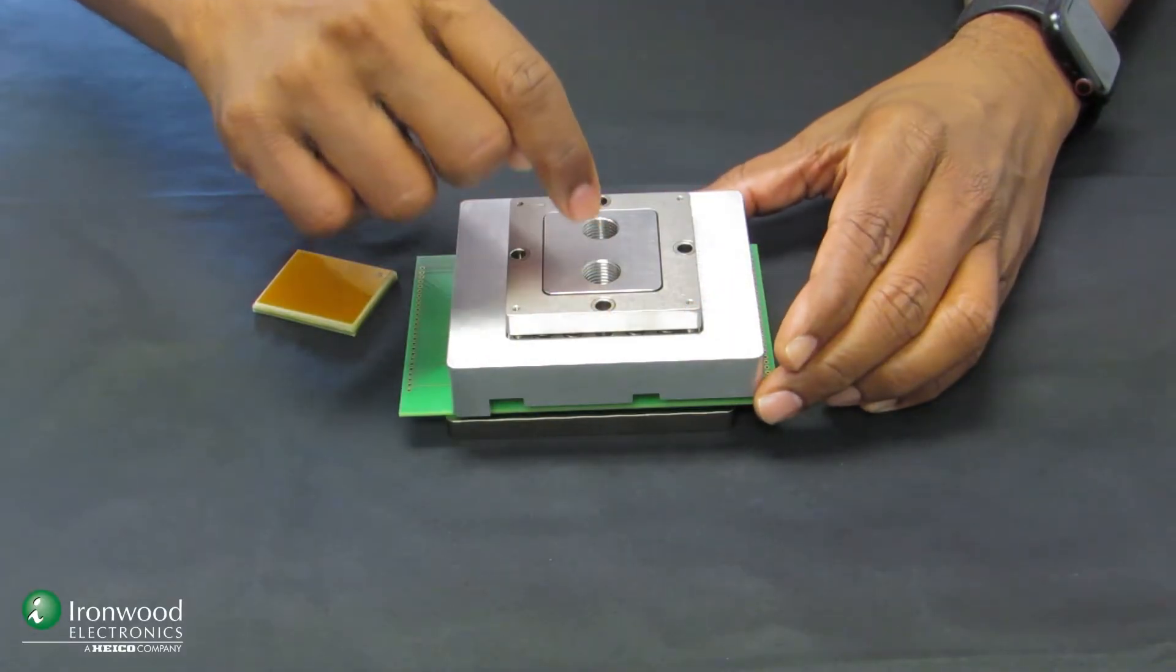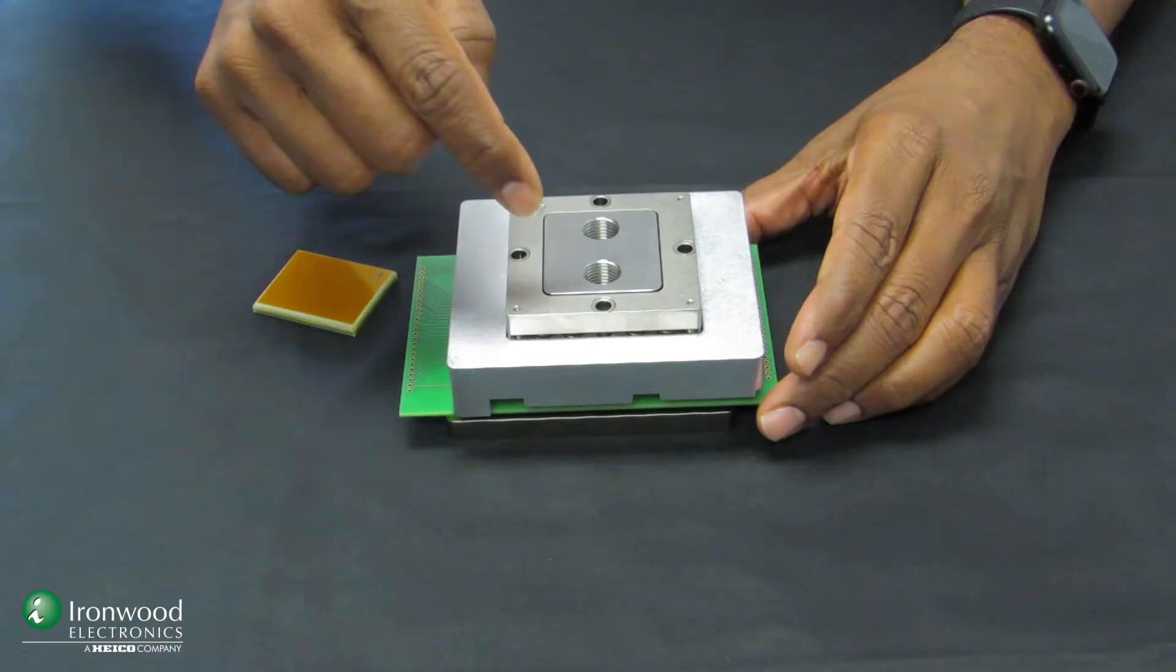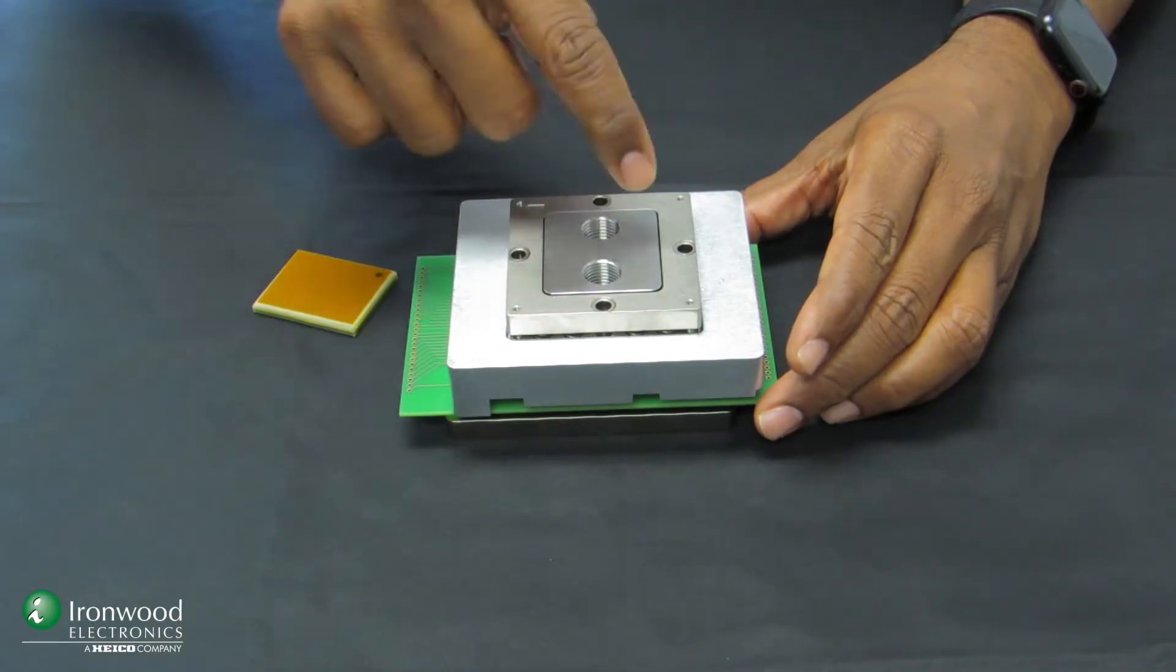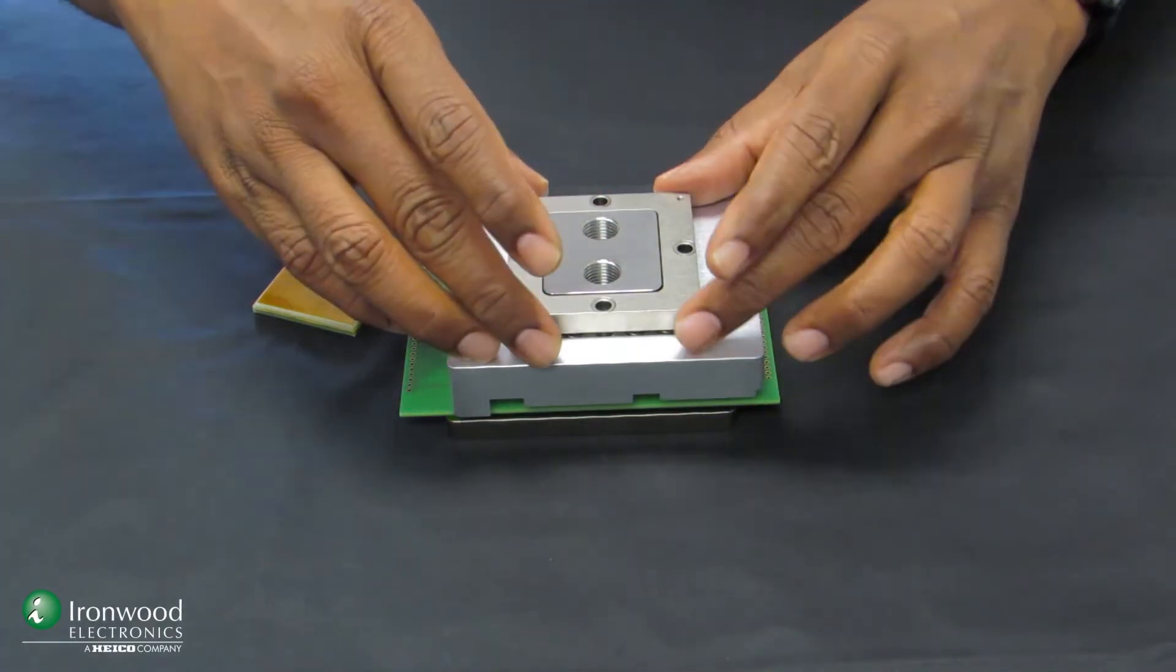It has an inlet and an outlet. Inside, the fluid goes through multiple channels, pulls the heat out, and circulates it back out.